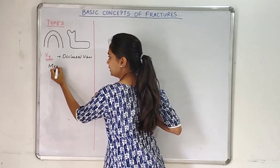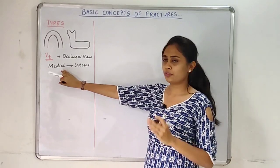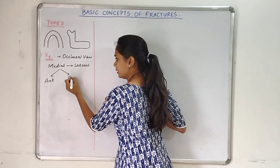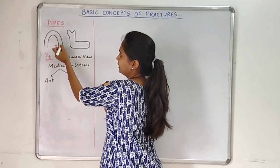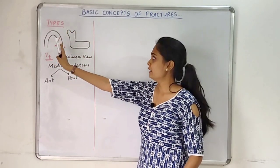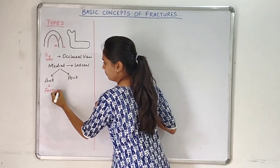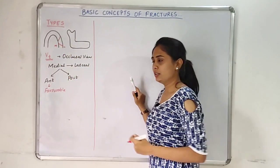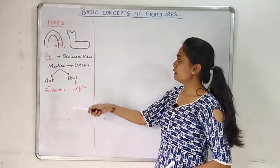We look at the fracture lines going from the medial to the lateral side. In the occlusal view, this is the medial side and this is the lateral side. If the fracture line goes from the medial side to the lateral side anteriorly, we call such fractures favorable fractures. If the fracture line goes from medial to lateral side posteriorly, we call such fractures unfavorable fractures.